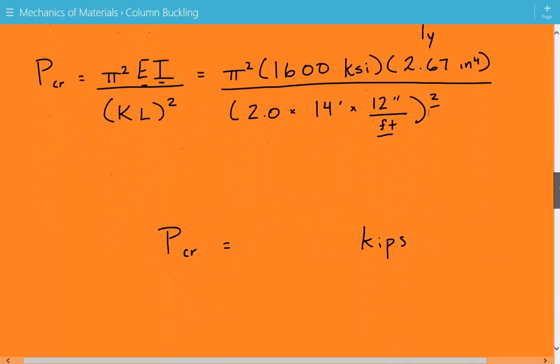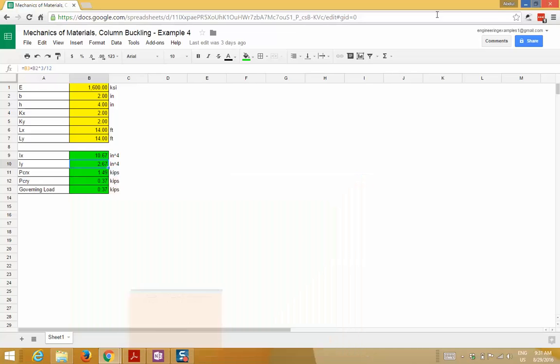The critical buckling load equals 0.37 kips. In the spreadsheet, I calculated the critical buckling load about the X and Y axis separately and chose the smallest value. But in this calculation, I used one calculation because the effective length is the same for both axes, so we can automatically input the smallest moment of inertia value and get Pcr = 0.37 kips.